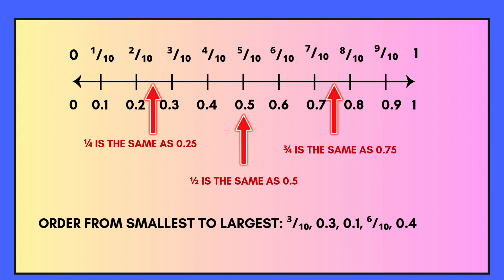Try ordering the following decimals and fractions from smallest to largest. Pause the video while you work out your answer. You need to order: three tenths, 0.3, 0.1, six tenths, and 0.4.